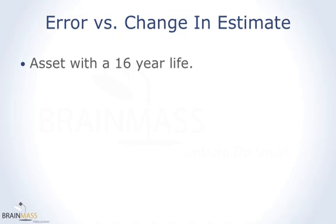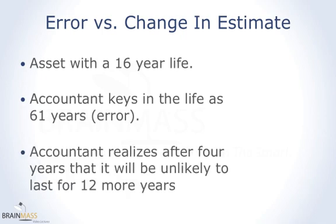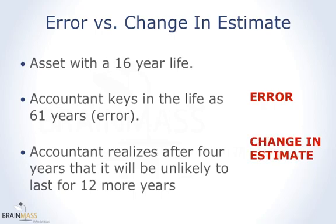What if you had an asset that you estimated was going to last 16 years, but the accountant who entered it into the fixed asset software keyed it in incorrectly as 61 years? Or what about this scenario: the accountant realizes after working with the asset for four years that it's not going to last 16 more years — it's going to have a shorter life. The typo is an error and must be fixed in the current year and in prior years. The change in estimate only needs to be fixed for the current year and going forward.